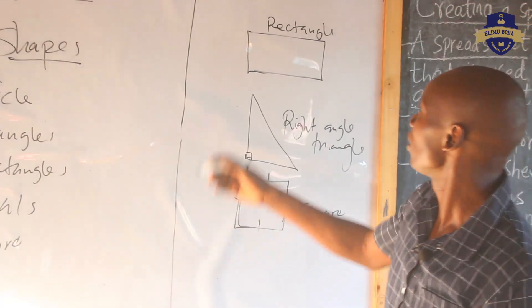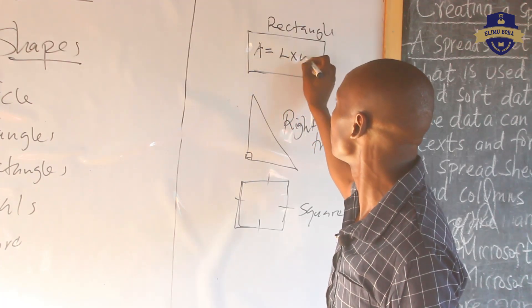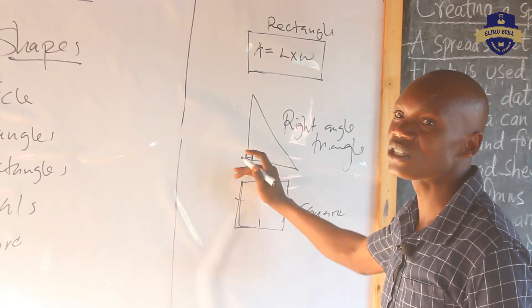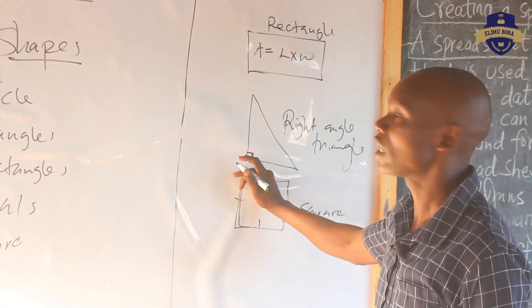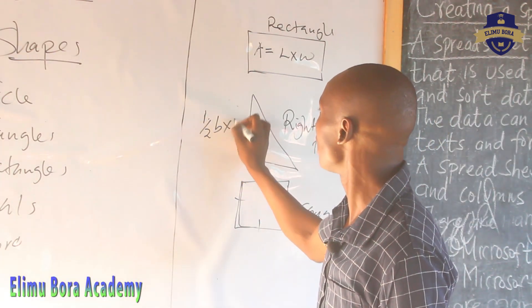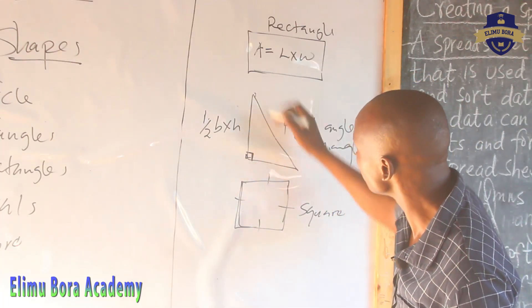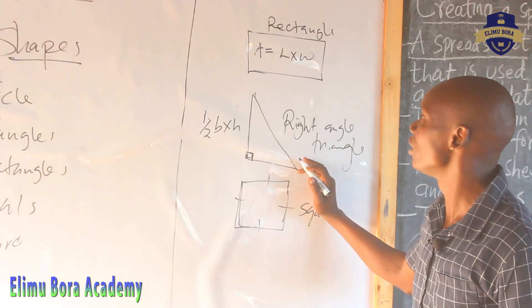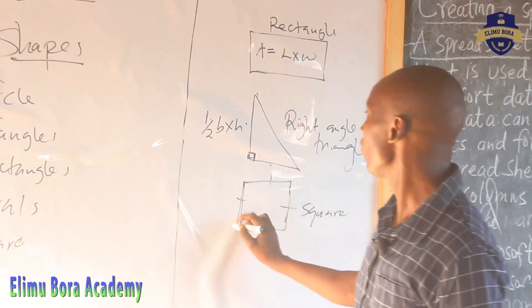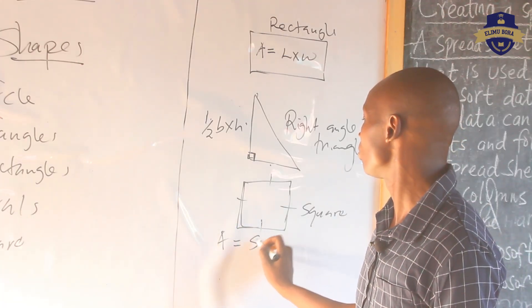If you can recall, the area of a rectangle is equal to A, which means area, is equal to length times width. If you see a triangle with 90 degrees, it shows that that is a right-angled triangle. The area of a right-angled triangle is one half times base times height. You take this as the height, the altitude, and this is the base. Don't use the hypotenuse line. Area of a square, because all sides are equal, is equal to side times side.